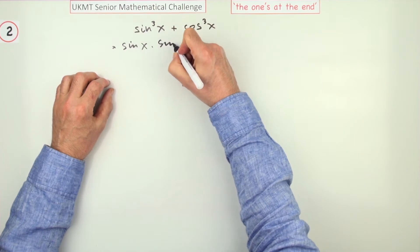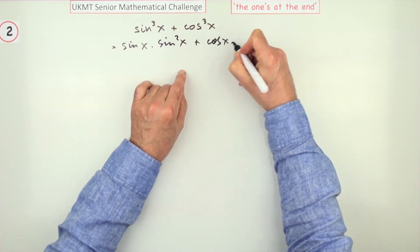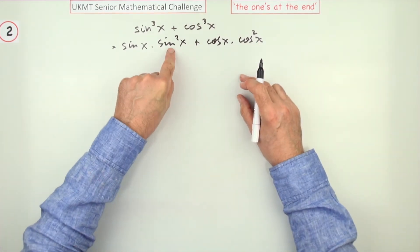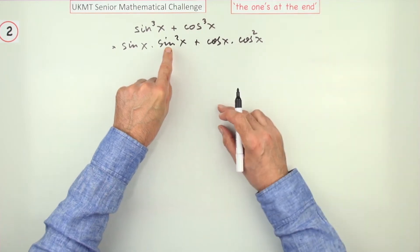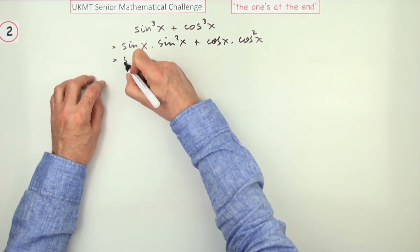So sine x times sine x squared plus cos x times cos x squared. Of course you could have jumped straight in with which is what you're going to do next: 1 minus cos squared, 1 minus sine squared, because after all you're not having to set it out formally.